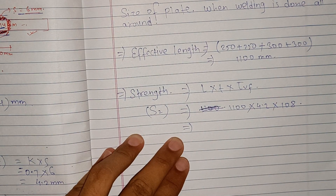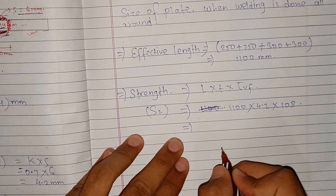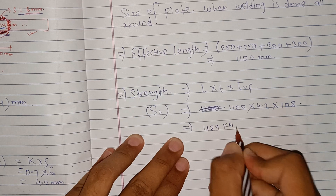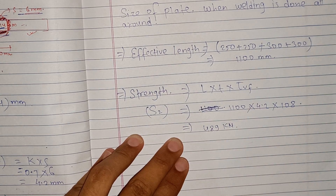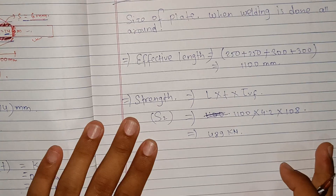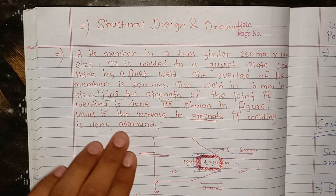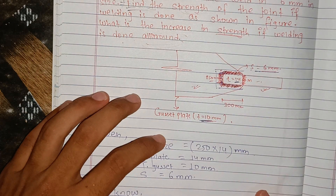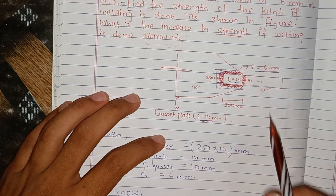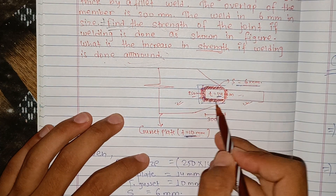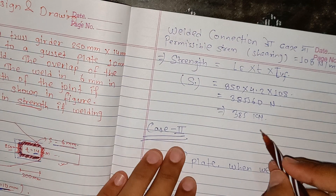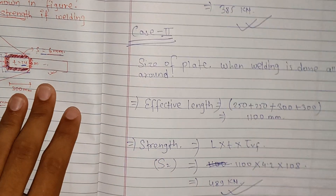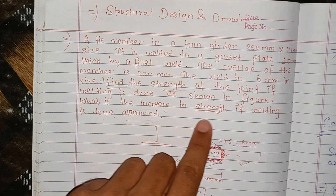This gives the value of 489 kN. This is the strength of the joint when welding is done all around, as shown in the figure. We can now see what is the increase in strength.